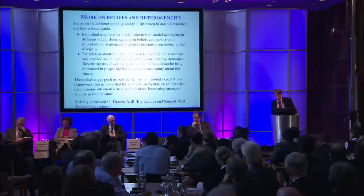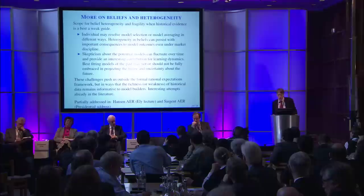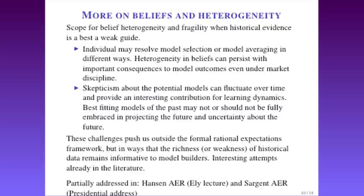This notion that risk premia can fluctuate over business cycles might instead reflect uncertainty premia, or struggles over which among alternative models are best fitting. Best-fitting models of the past should not be fully embraced in projecting the future, and uncertainty about the future — this skepticism — can translate into interesting implications for the actions of economic agents, investors, and the like. If projecting future macroeconomic growth rates is important for decision making, then there's enormous scope for diversity in beliefs, and it becomes fruitful to incorporate these within economic models. There are interesting attempts in the literature, including decision theory work providing underpinnings for the Keynes-Hayek-Knight distinctions between uncertainty and risk.